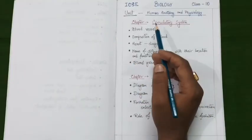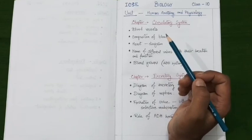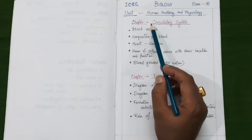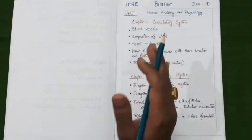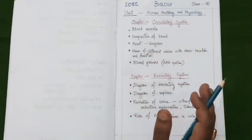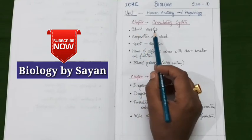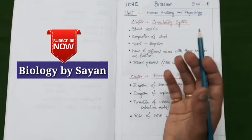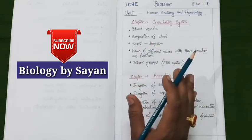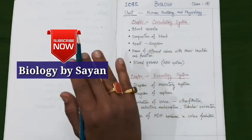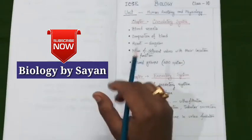Today we will start our discussion with the unit human anatomy and physiology, and under this unit our first chapter is the circulatory system. The first important topic is different blood vessels — veins, arteries, and capillaries — and you need to prepare their diagrams. You may certainly expect questions like finding the differences between veins and arteries.